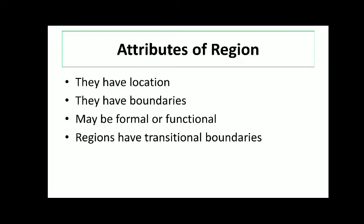The next attribute is that a region may be a formal or functional region. Also, those regions may have a transitional boundary. A transitional boundary means that in the middle zone between regions, you will find a mix of rural characteristics plus urban characteristics. Because when you are moving away from Bhubaneswar, urban characteristics diminish a little bit and rural characteristics may be found surrounding the rural region. So this zone is a transitional zone — that is a transitional boundary.